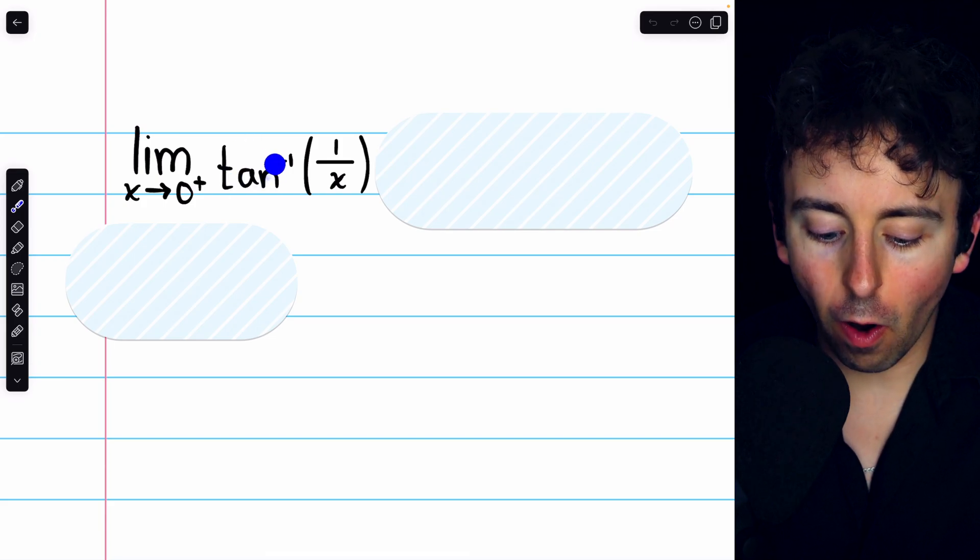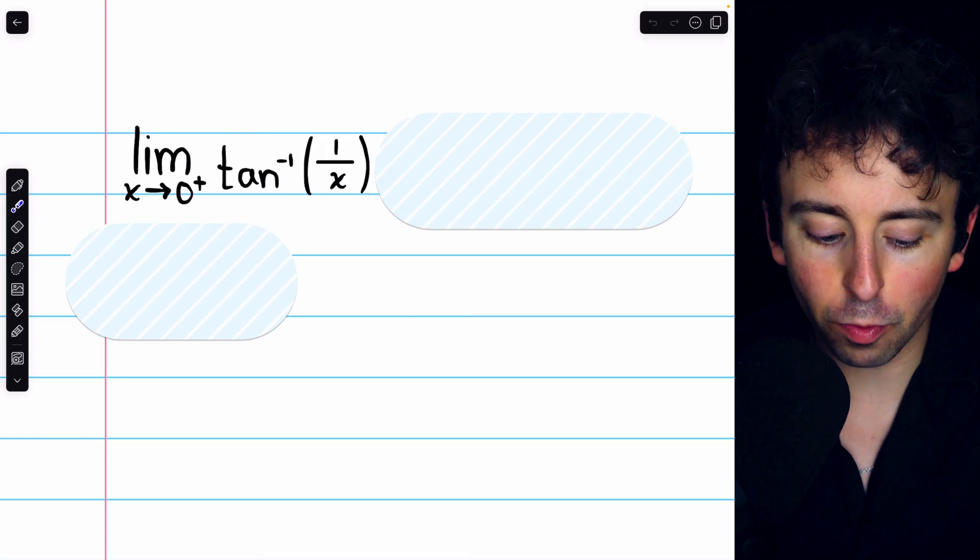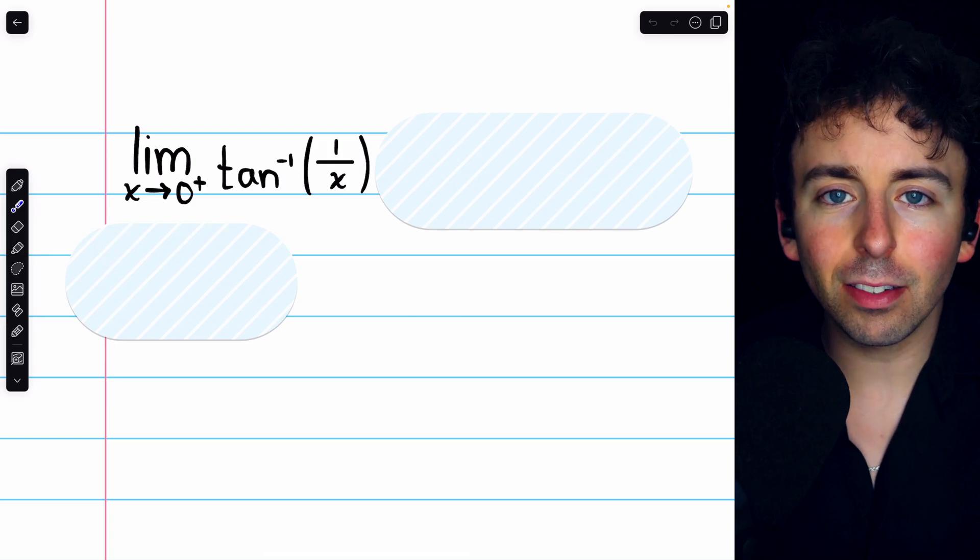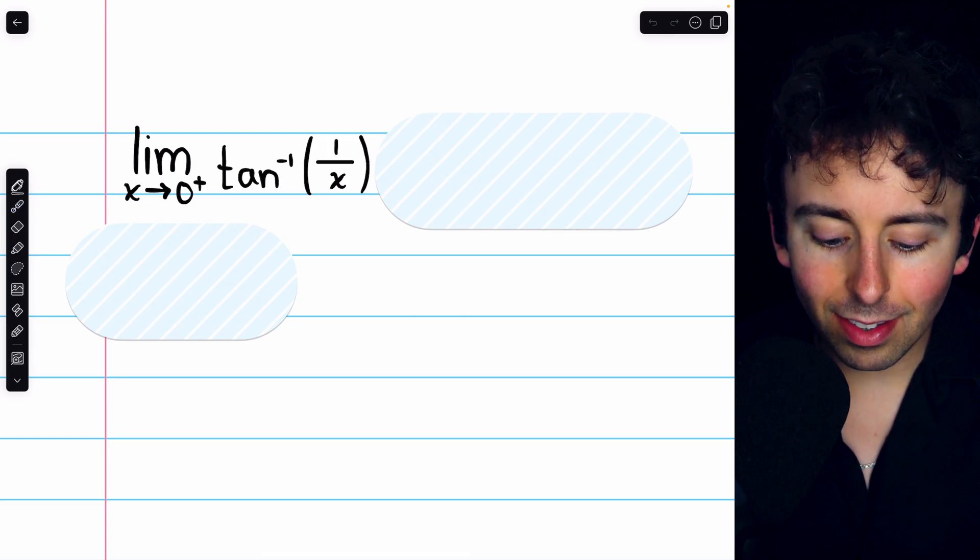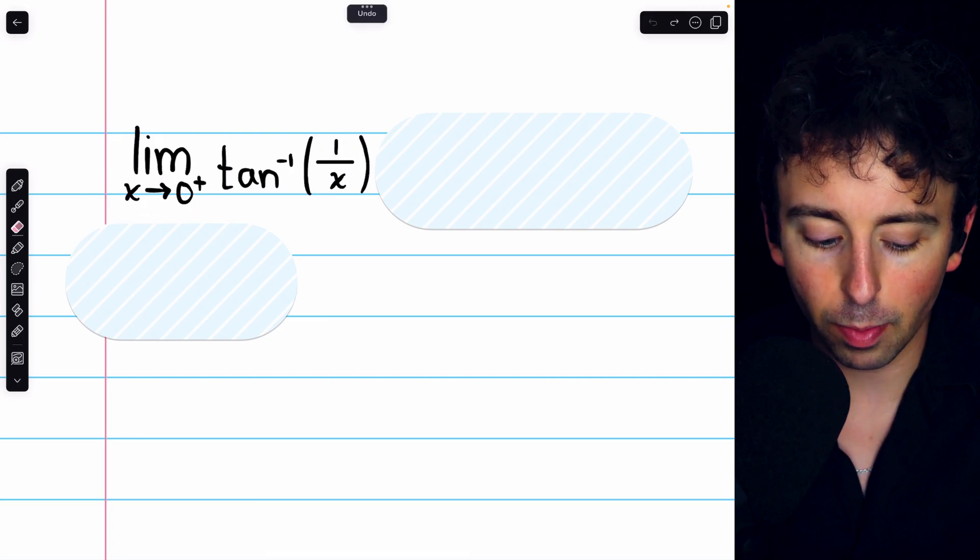To evaluate the limit of arctan of 1 over x as x approaches 0 from the right, a good place to start is to ask what is the input 1 over x doing as x approaches 0 from the right?